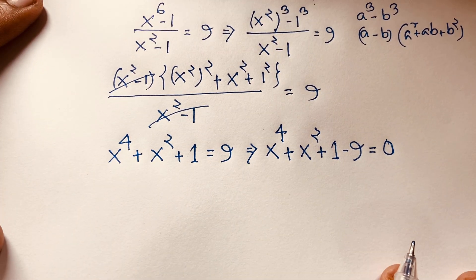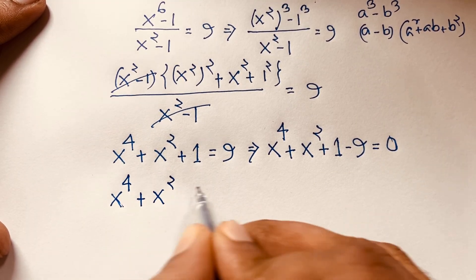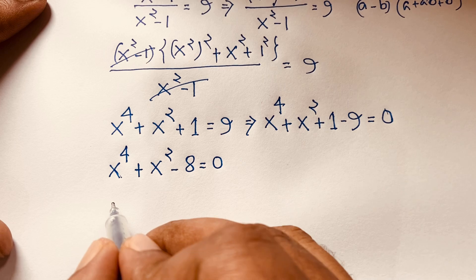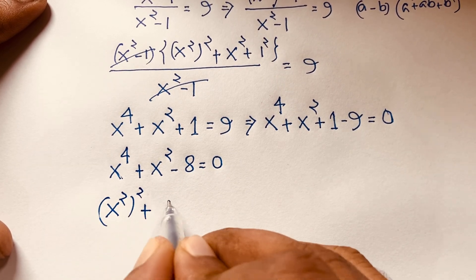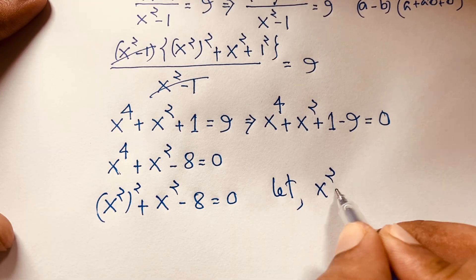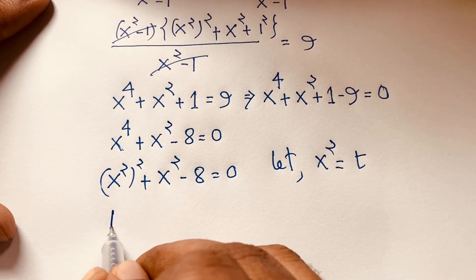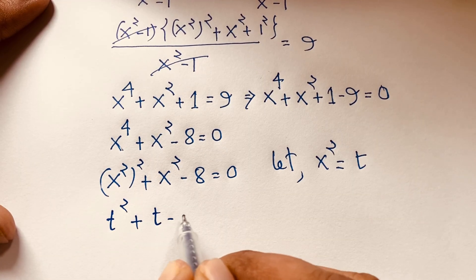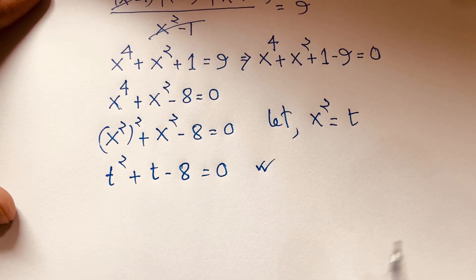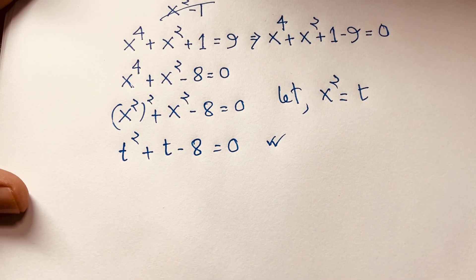We have (x to the power 2) squared plus x to the power 2 minus 8 equals 0. Now let x to the power 2 equal t. This expression becomes t squared plus t minus 8 equals 0. This is a nice quadratic equation, and we will find out what t equals.